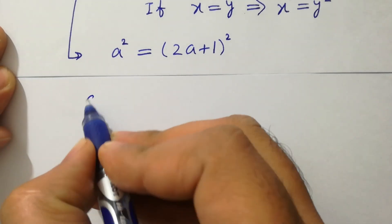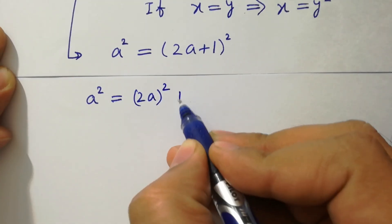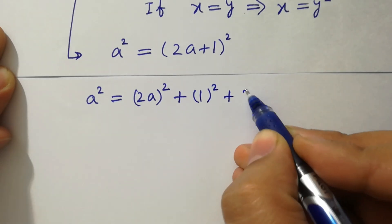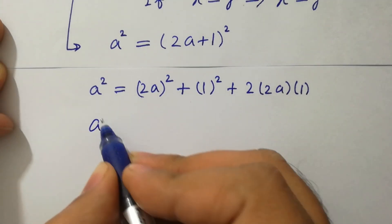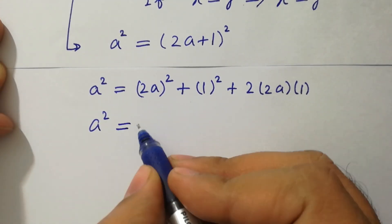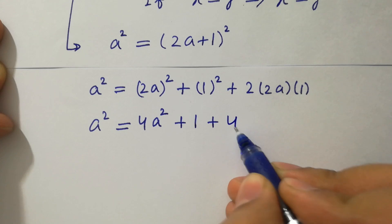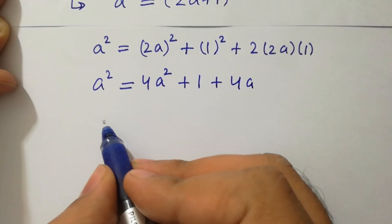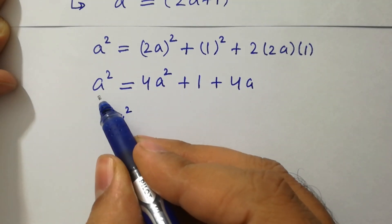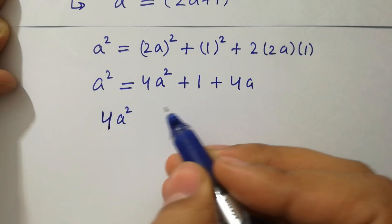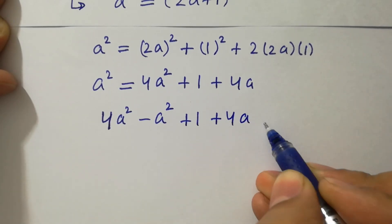Simplifying using the (a+b)² formula: a² = (2a)² + 1² + 2·(2a)·1, which gives a² = 4a² + 1 + 4a. Bringing a² to the right-hand side: 4a² - a² + 4a + 1 = 0, so we have 3a² + 4a + 1 = 0.